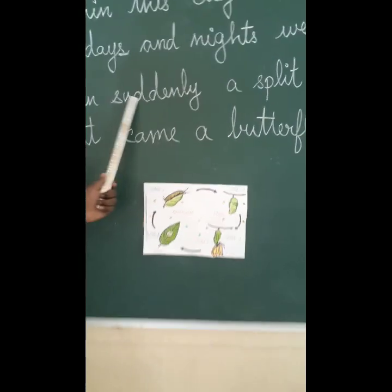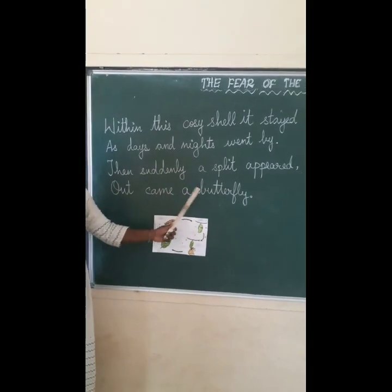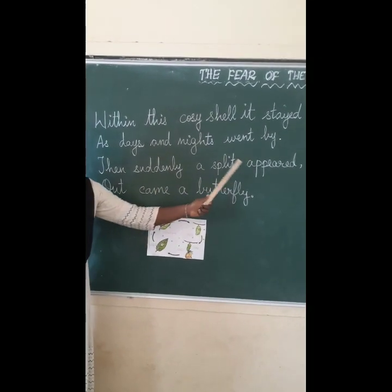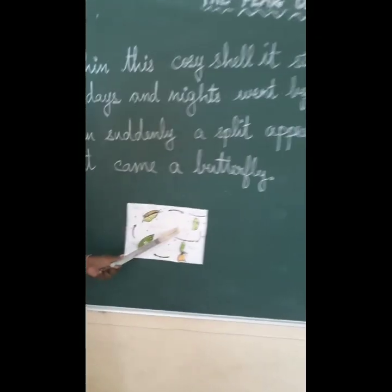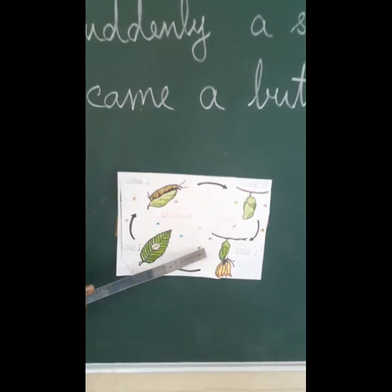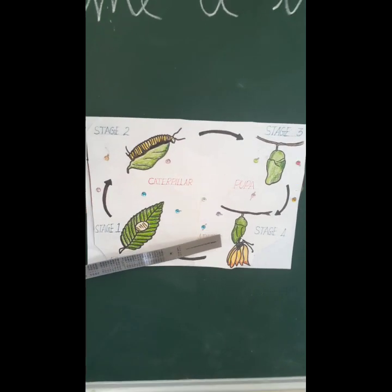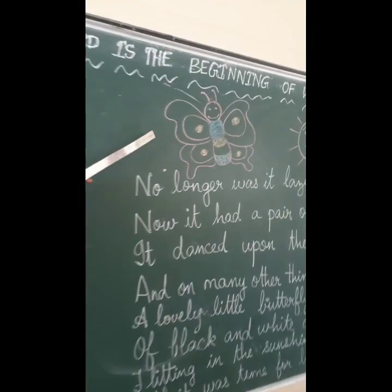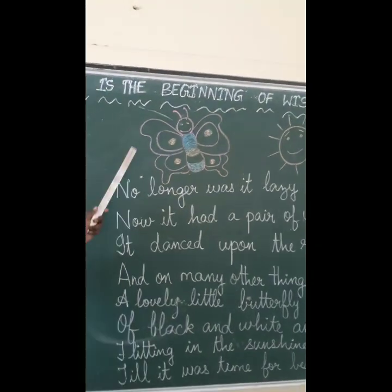Then suddenly a split appeared — out came a butterfly! After staying in the pupa, suddenly a split appeared, the pupa burst, and it came out as a beautiful butterfly. You can see the butterfly — a colorful butterfly flying all over the flowers.